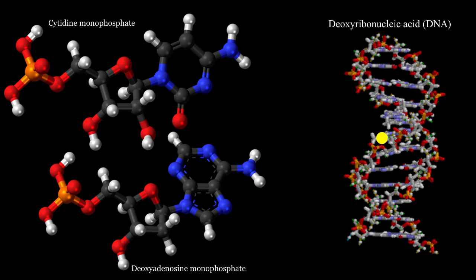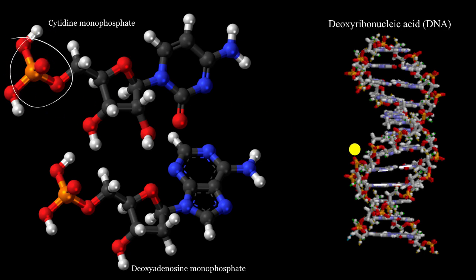One question you might ask is: if part of the molecule has basic characteristics, why is it considered an acid? Well, look at how this molecule is structured. The basic parts form the rungs of this ladder, so they're not going to be as reactive because they're closer to the inside of the molecule, while the acidic parts — the phosphate groups — are on the outside, so they're going to be more reactive. And so the molecule as a whole is going to have an acidic characteristic.